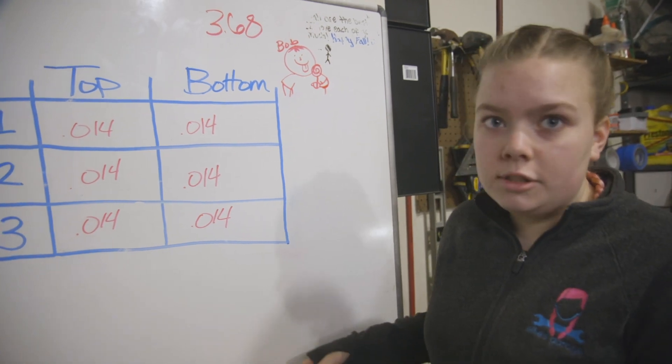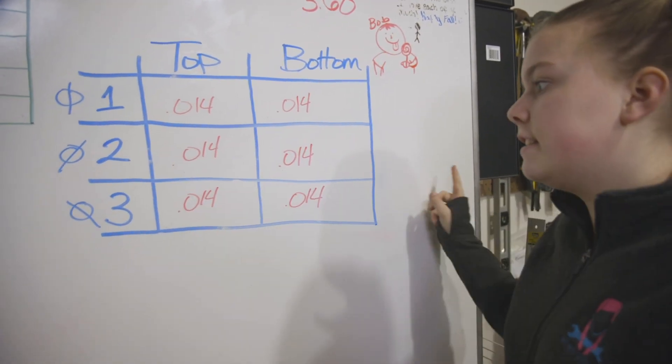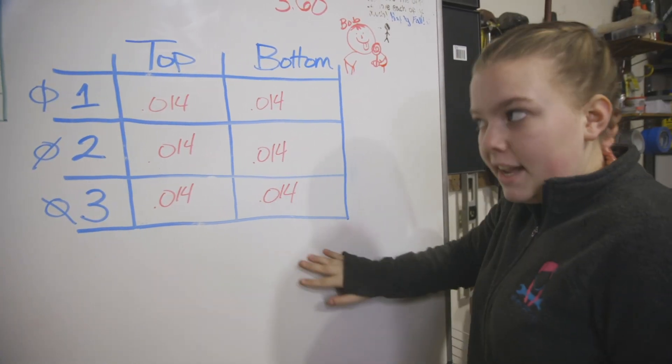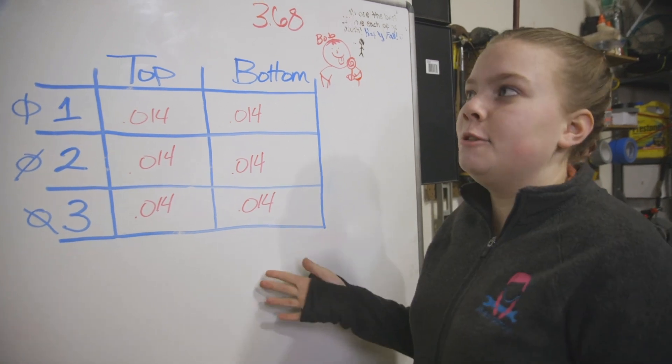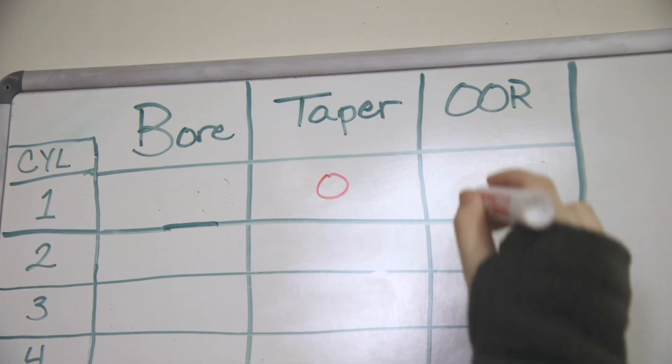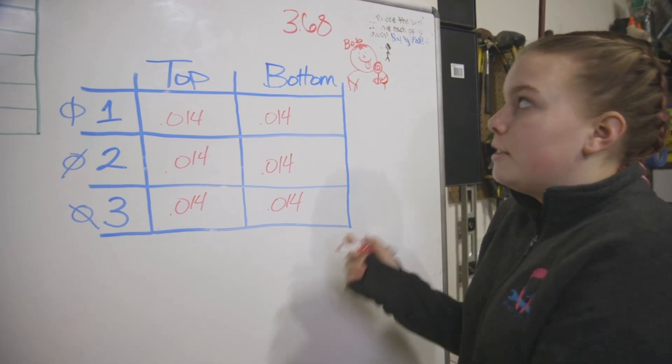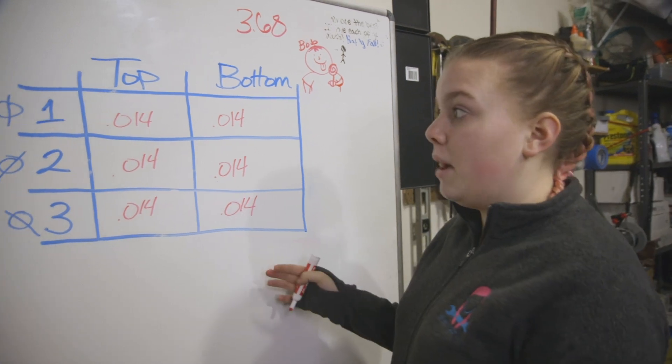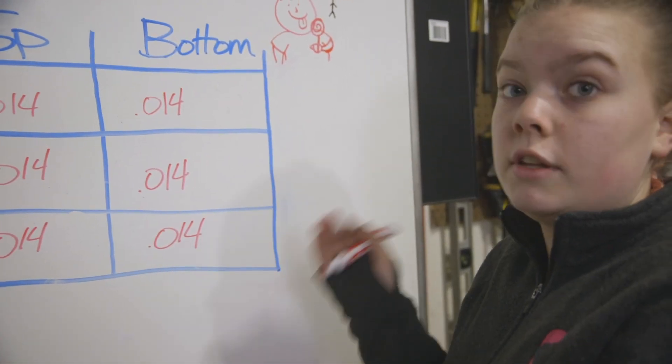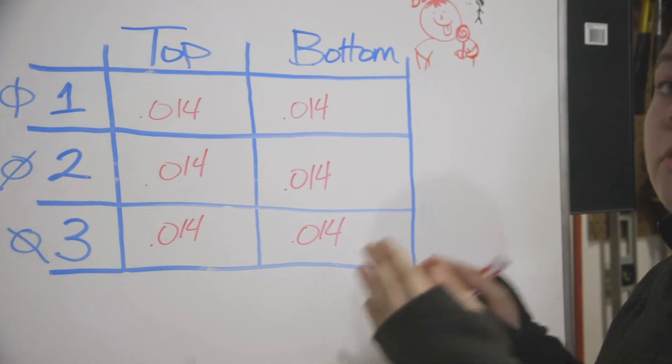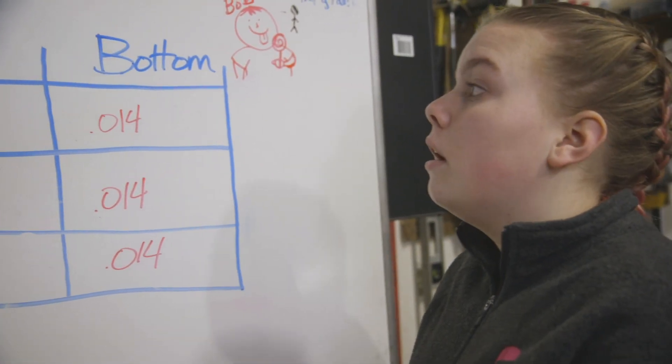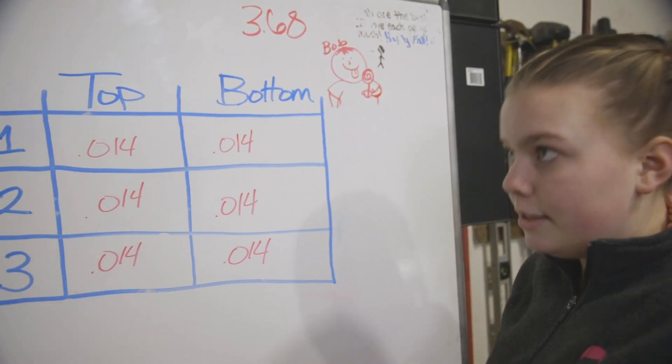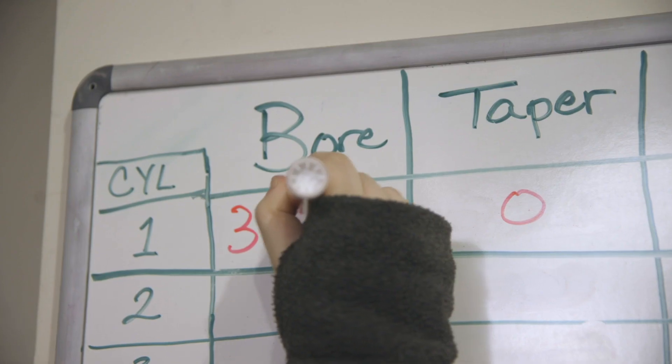So, normally what you would do is you would take the difference between each of these for the taper, and then the difference of each of these for the out of round. But there's no difference. So there's no taper and no out of round, which is good. But the bore size is, well, to find the bore size, you add the biggest one, which is 14 thousandths. And you add it to 3.68. That means that the bore size is 3.694.